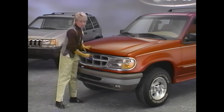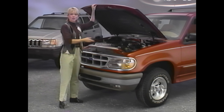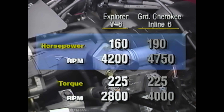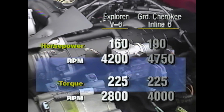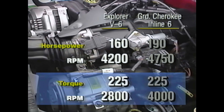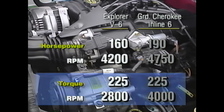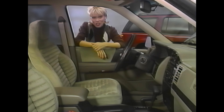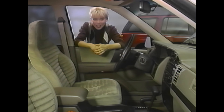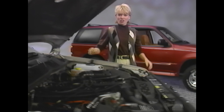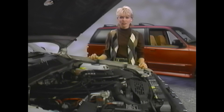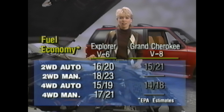Serious four-wheelers may ask how Explorer's horsepower and torque compare to Grand Cherokee's. Explorer's electronically fuel-injected V6 with standard manual transmission hits peak torque at a lower RPM than Grand Cherokee's inline-six. What's more, Grand Cherokee offers only an automatic transmission — a manual transmission is not available. Explorer offers both. Jeep does offer an optional V8 engine. If a buyer insists on a V8, explain that Explorer's V6 puts less weight on the front axle for easier handling, and that in some cases it delivers better fuel economy.